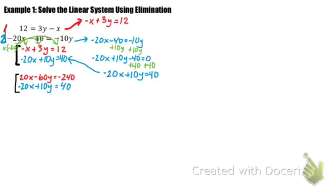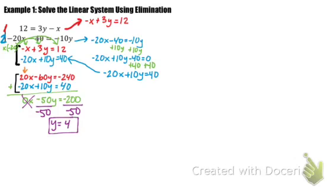Once I realize that I have two opposite terms, I'm going to add both of my equations to cancel out one of my variables, and then add the rest of them. I have negative 60y plus 10y equals negative 50y, and negative 240 plus 40 equals negative 200. Since we have a 0x, I'm just going to cancel that out and solve for my y. Divide both sides by negative 50, and y equals 4.